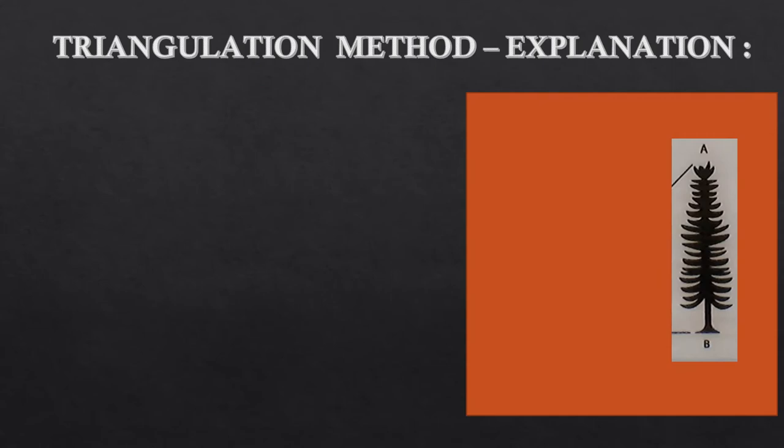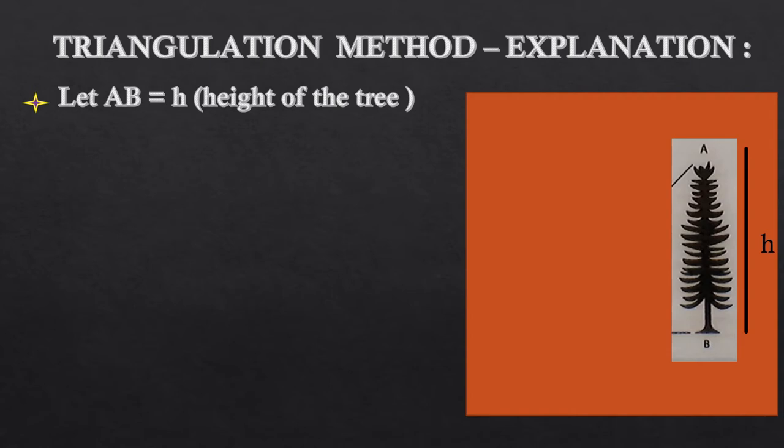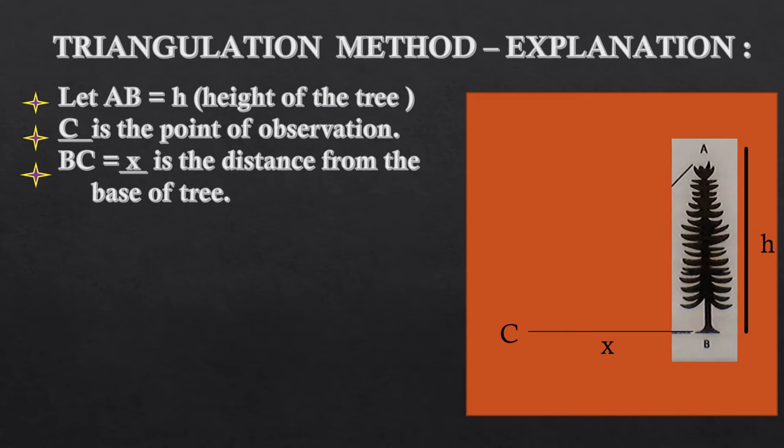As you can see in the figure, AB is the tree and its height is measured as h, so AB equals h. C is a point on the ground and C is the point of observation. The distance between the base of the tree, that is B, and the point of observation C, BC equals x, is the distance.